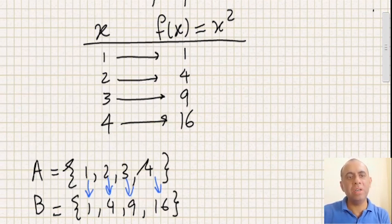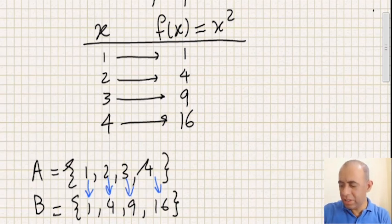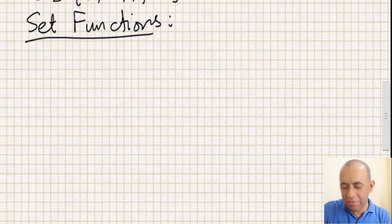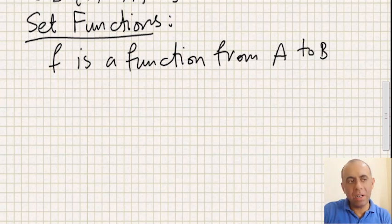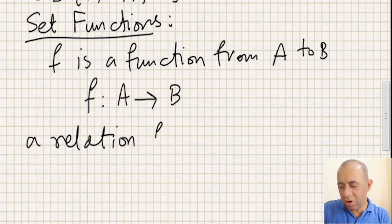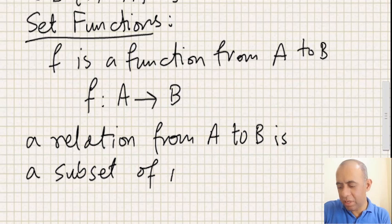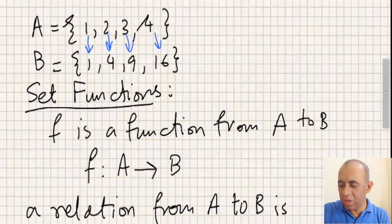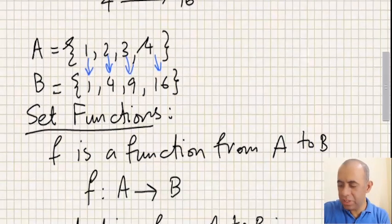Now let's get to functions on sets, which we call set functions. Formally, f is a function from A to B, written as f: A → B. A relation from A to B is a subset of A cross B, which is the Cartesian product of the two sets.